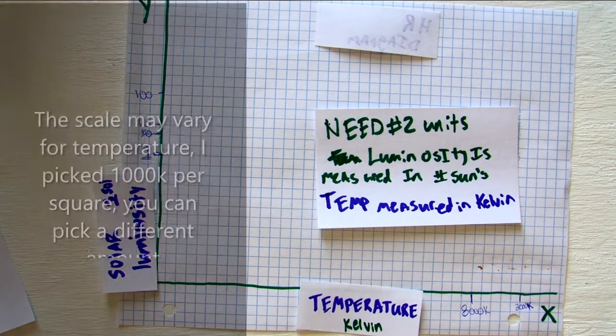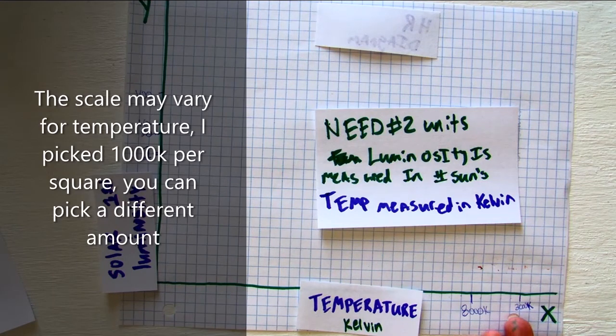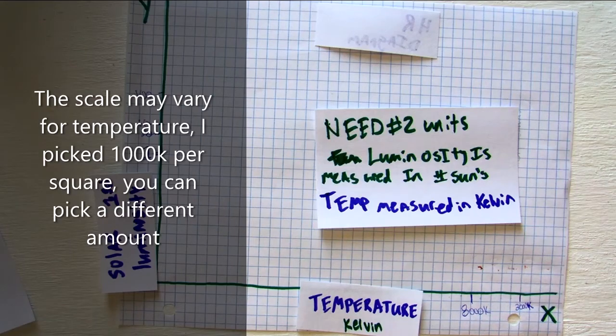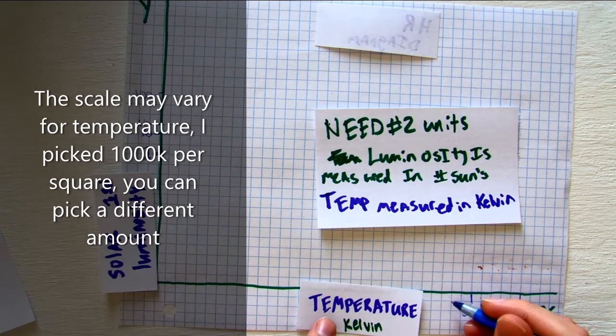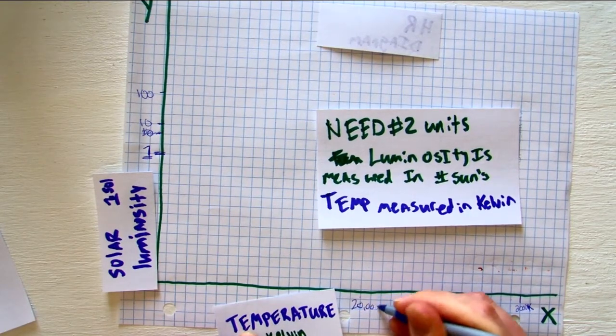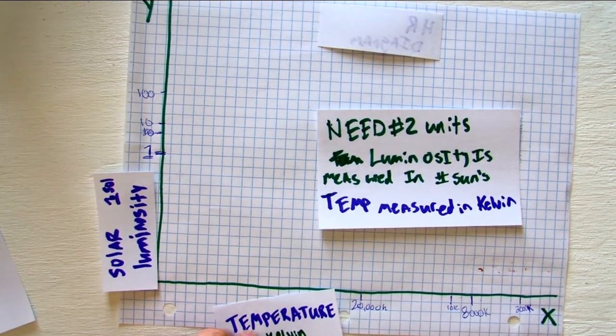So for my graph, on the bottom temperature, every space in the graph is 1,000 extra Kelvin. So if this was 8,000 Kelvin, this would be 10,000 Kelvin, 20,000 Kelvin, and so forth.